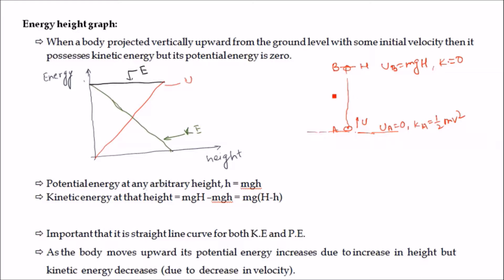Based on this concept, if we calculate the potential energy at any arbitrary point — say point C at a small height h above the ground — the potential energy at point C equals mgh (small h). There is also some kinetic energy at this point, which is calculated using conservation of mechanical energy.